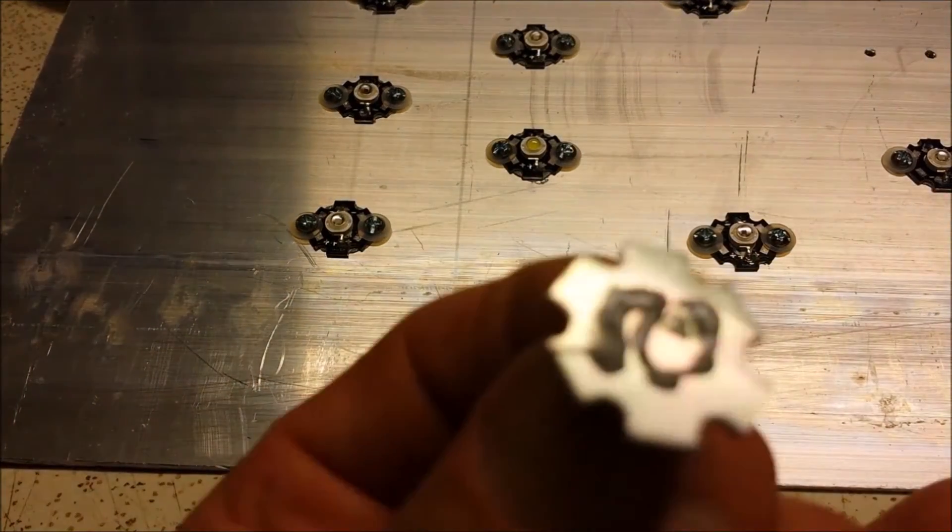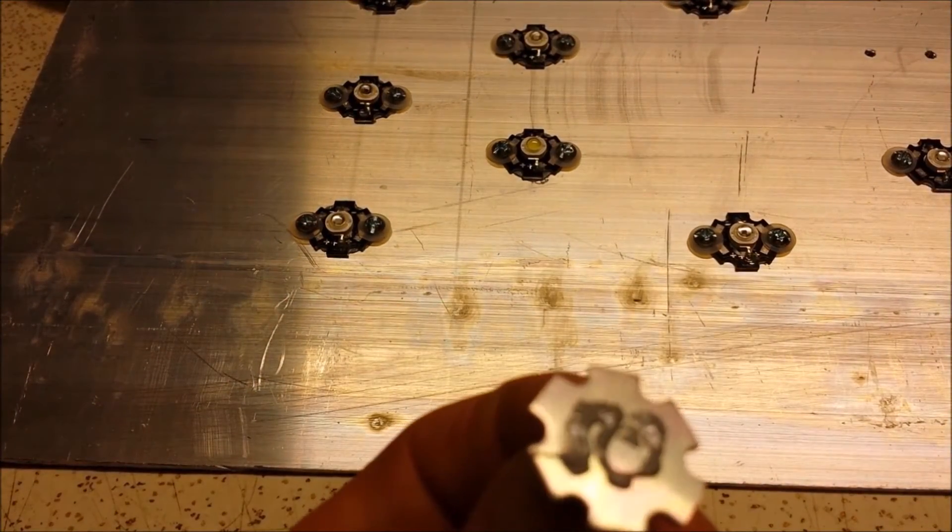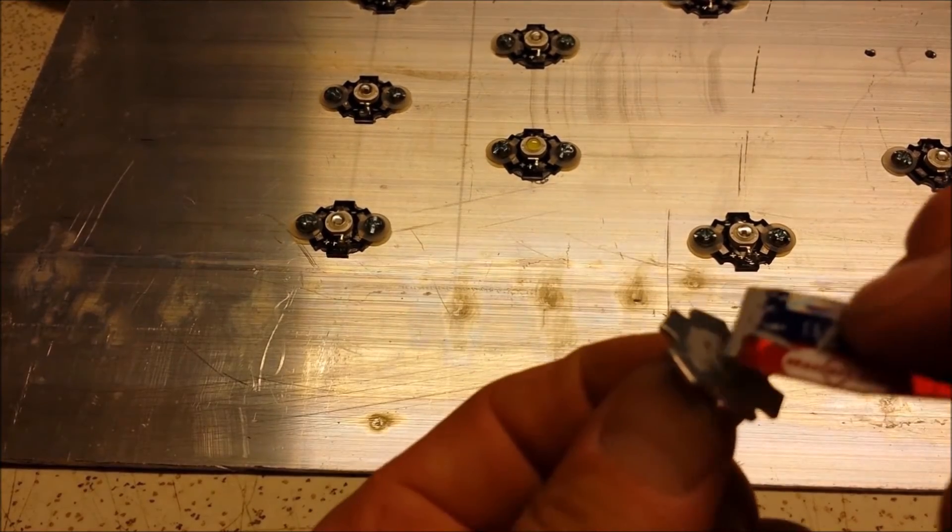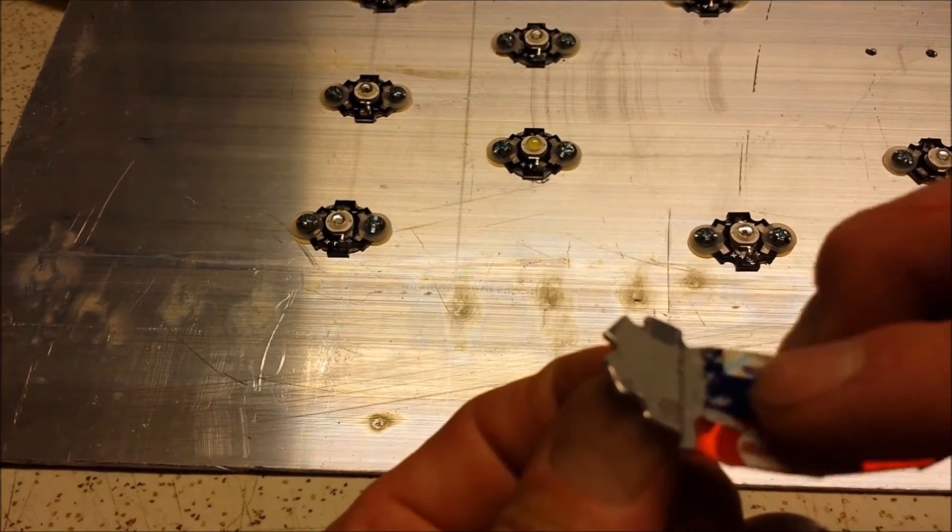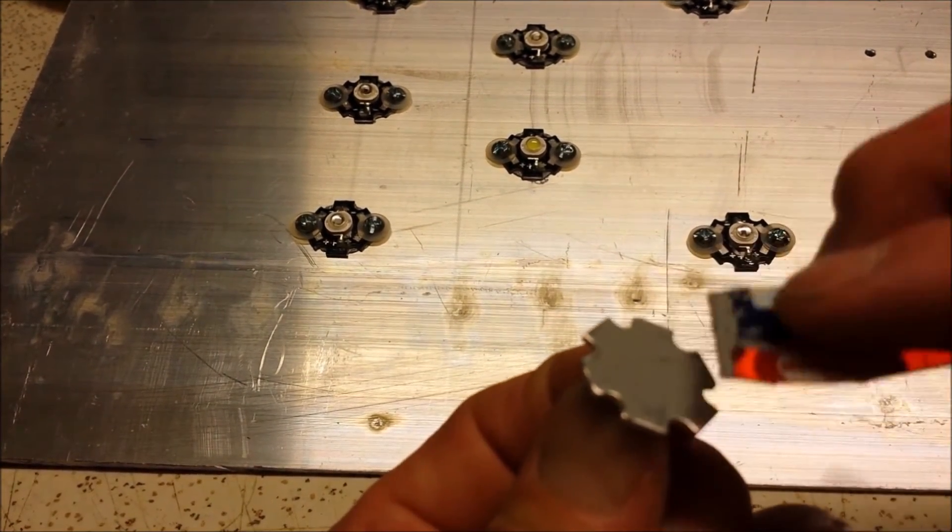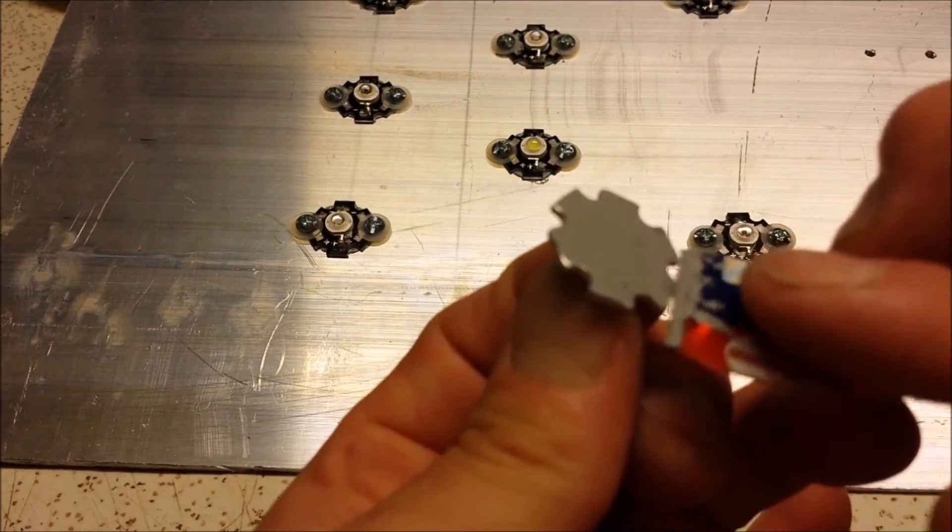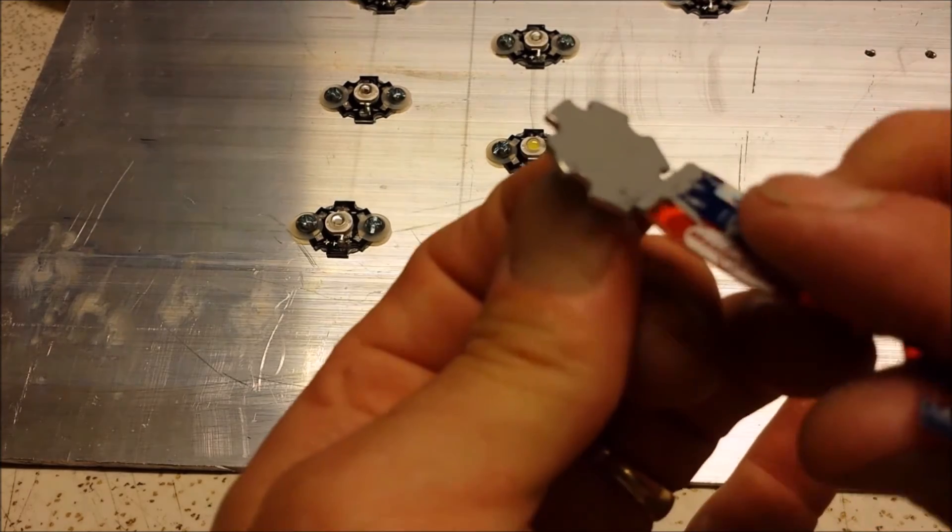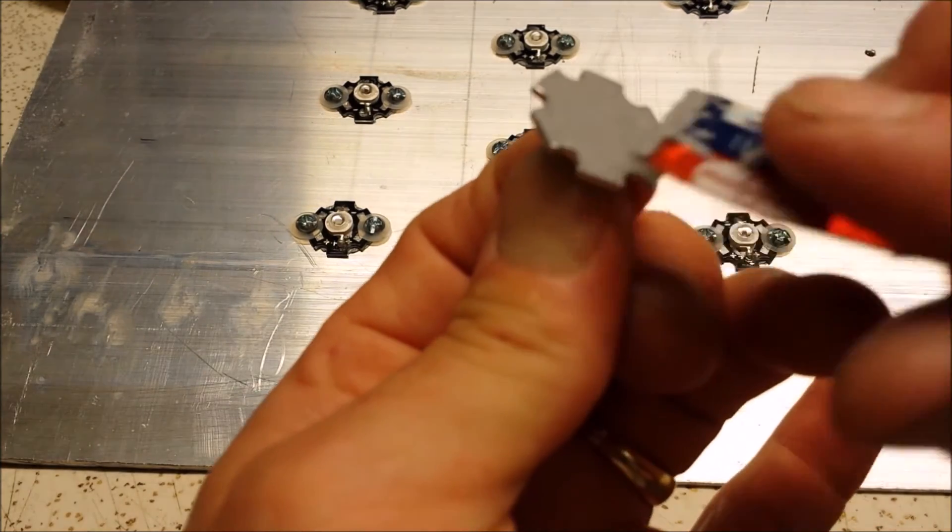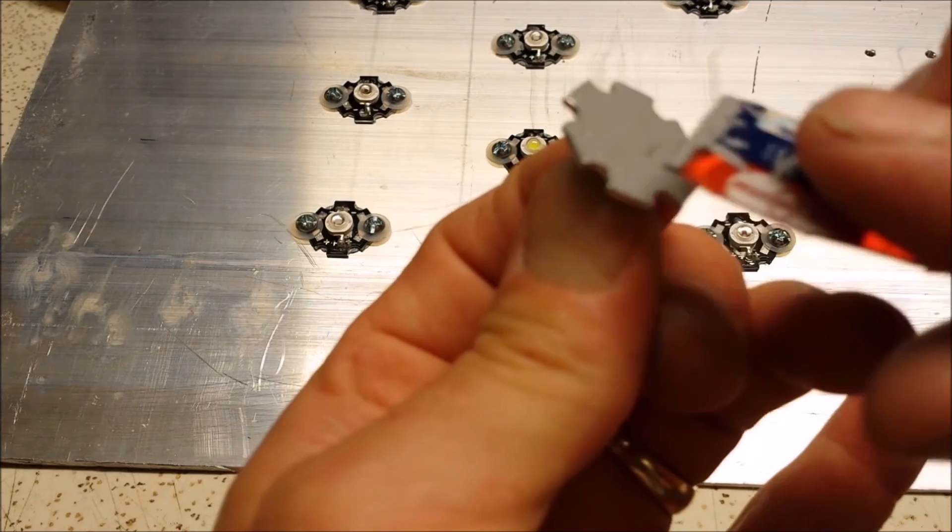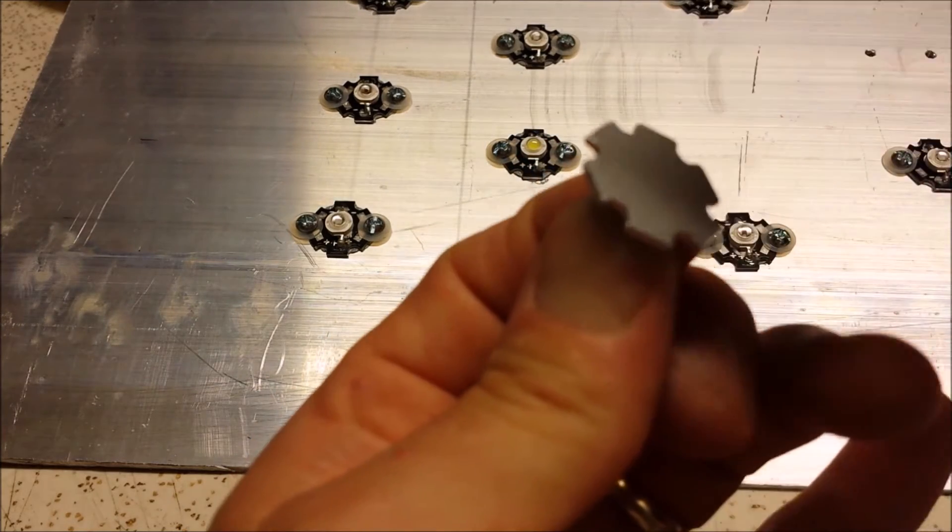Alright, I just want to make sure I show you this here. You don't need much of this heat sink compound. You see there's just a very little dab on there, and once you spread this out.